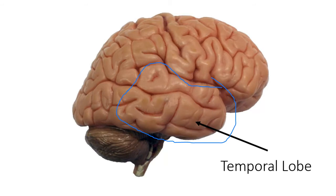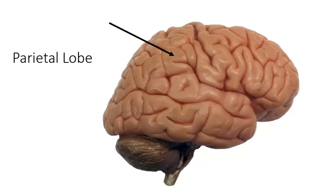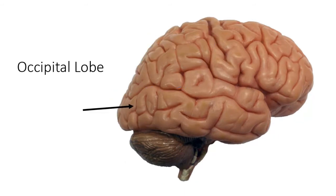Right above the temporal lobe but behind the frontal lobe is the parietal lobe. That's pretty much this guy back here — that's the parietal lobe. And then finally, our occipital lobe, which is on the back.